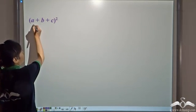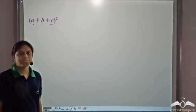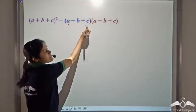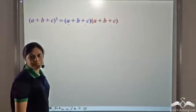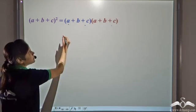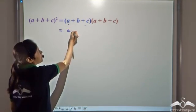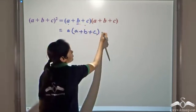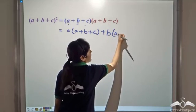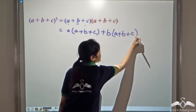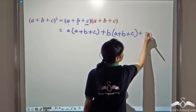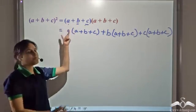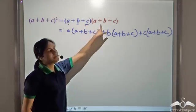Here we have an expression containing three terms: a plus b plus c. Let us square this expression. We can write it as (a plus b plus c) into (a plus b plus c). Using the distributive property, we can expand it as a times (a plus b plus c), plus b times (a plus b plus c), plus c times (a plus b plus c). So we have distributed this expression over itself.